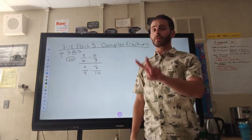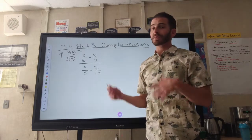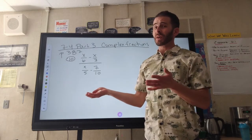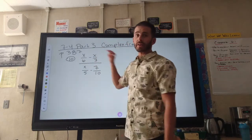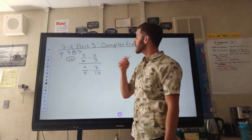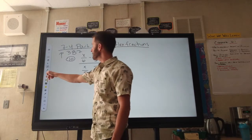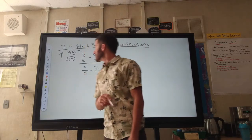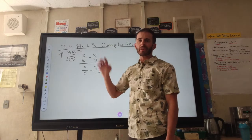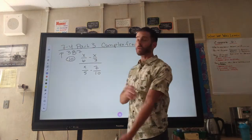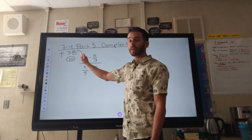There are two different methods to employ. They work any time, but sometimes you want to use one over another. For number 10, we have x over 6 minus x over 3, divided by x over 5 minus 7 over 10. I notice there are four different denominators, so I'm going to deal with just the numerator first.